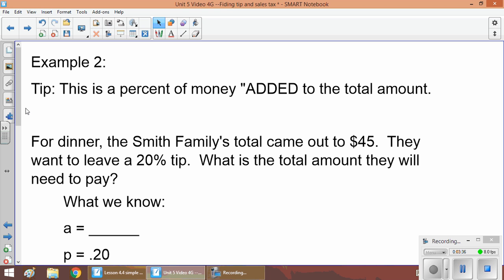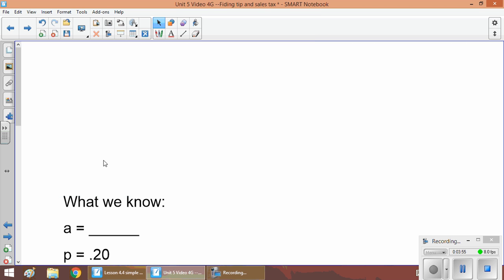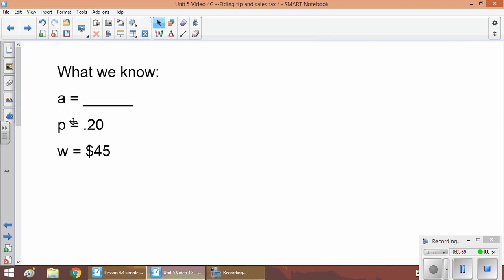All right, Example 2: tip. This is a percent of money added to the total amount. So for example, for dinner, the Smith family's total came out to $45. They want to leave a 20% tip. What is the total amount they will need to pay? So let's write down what we know. We know that the percent is 20%. We know the whole bill was $45. So we want to know how much our tip is going to be.